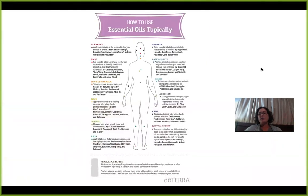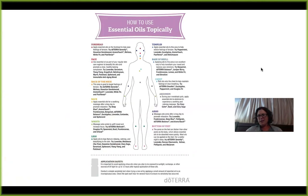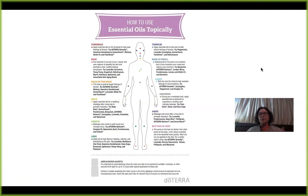Here's a great chart — if you Google 'doTERRA topical use,' it comes up and I absolutely love it. I'll be sure to post it in our group after this class. It talks about the different oils you can use and where you can use them — targeted areas including forehead, face, back, neck, wrist, legs, bottoms of feet, arms, abdomen, chest, base of skull, and temples. Definitely check out that diagram in more detail.